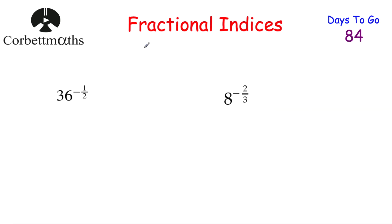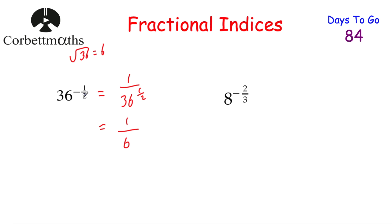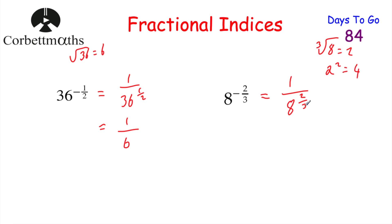Now let's look at negative fractional indices. For 36 to the power of negative 1/2: because it's a negative power, write 1 over 36 to the power of 1/2. A power of 1/2 means square root: √36 = 6. So the answer is 1/6. For 8 to the power of negative 2/3: write 1 over 8 to the power of 2/3. Take the cube root of 8 = 2, then raise to the power of 2: 2² = 4. So the answer is 1/4.